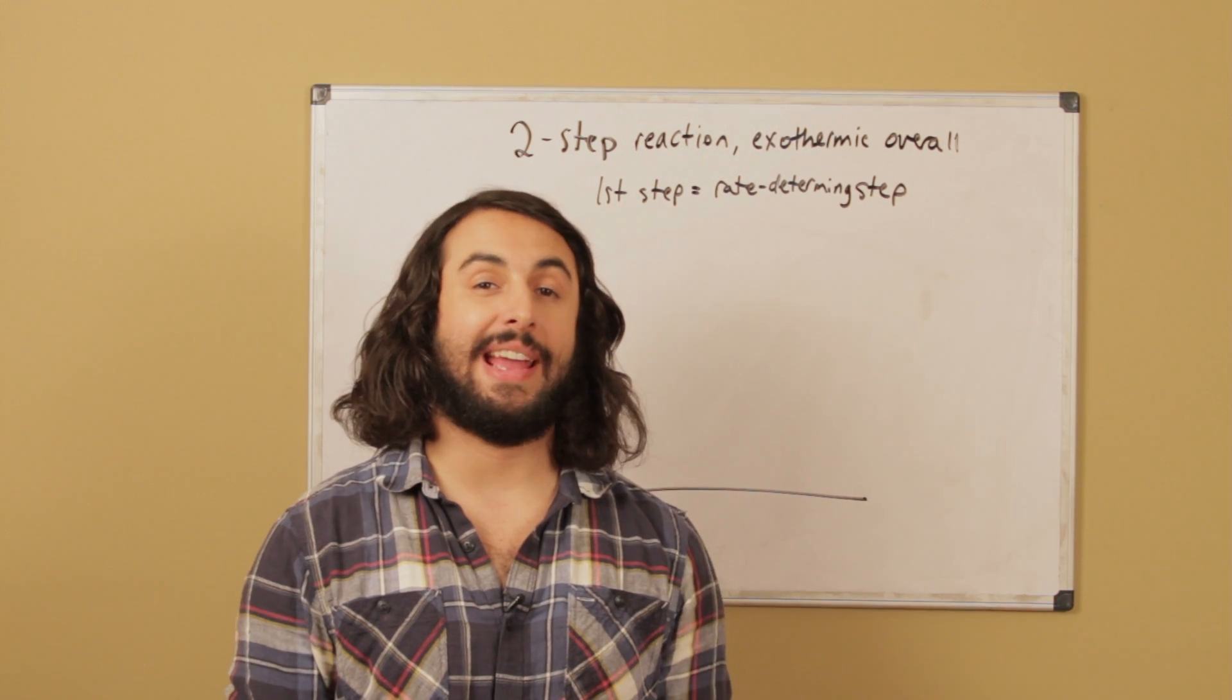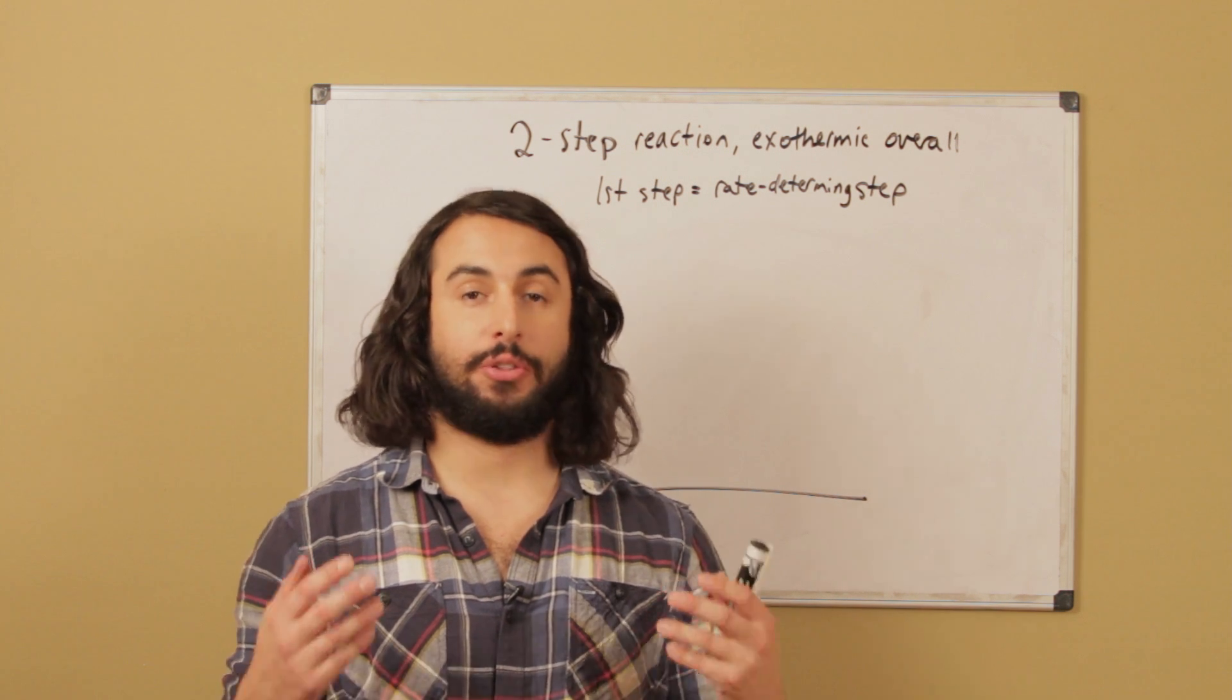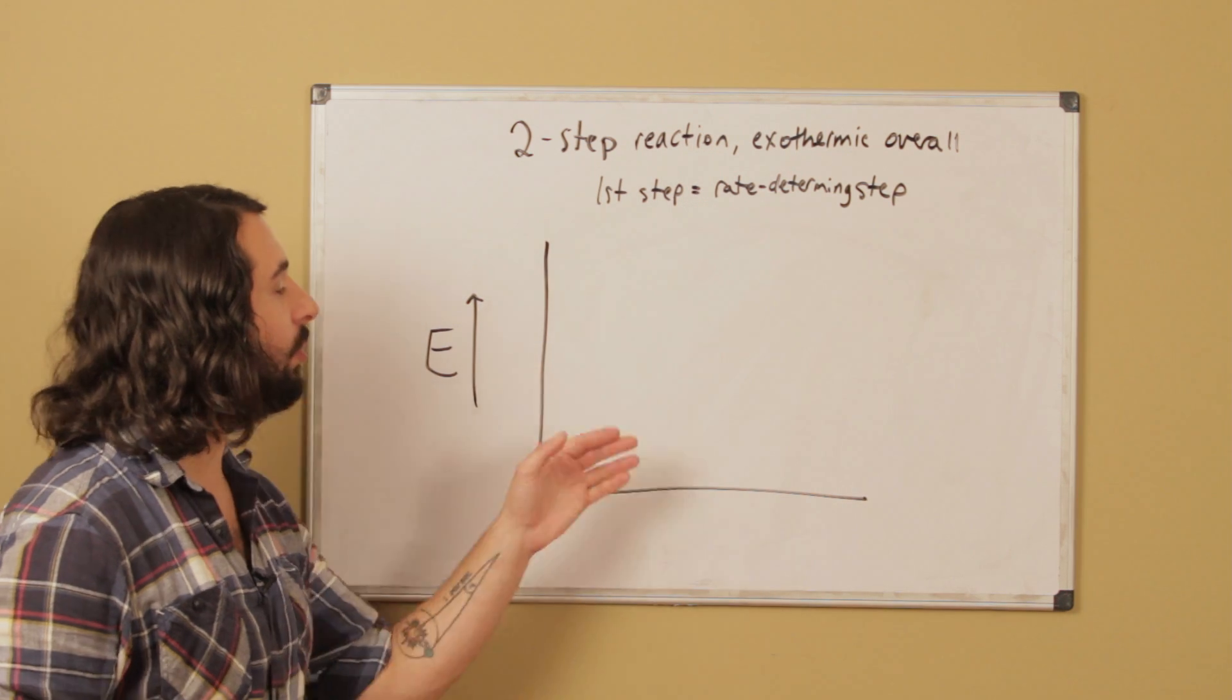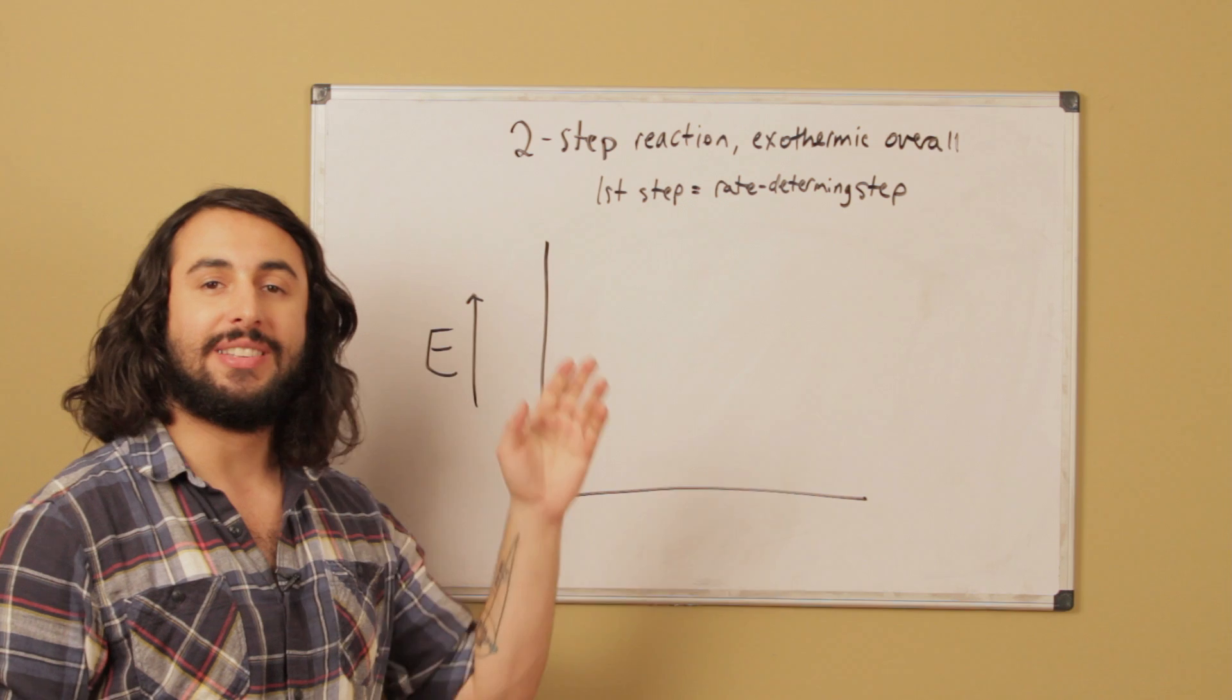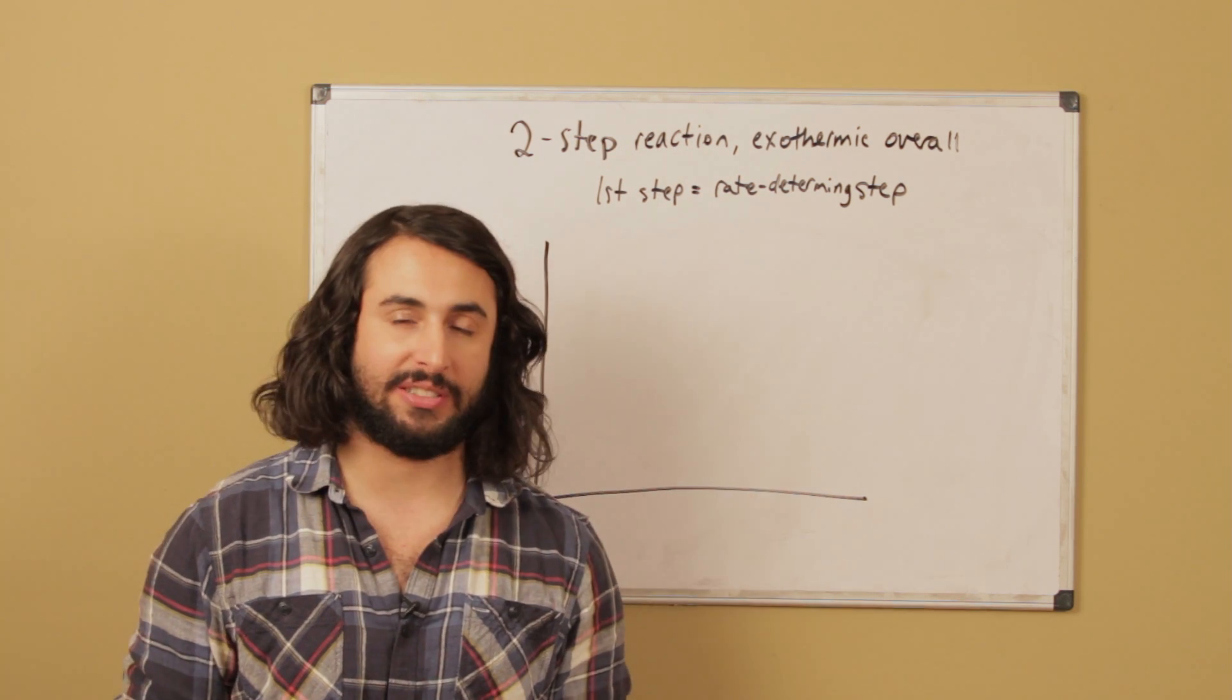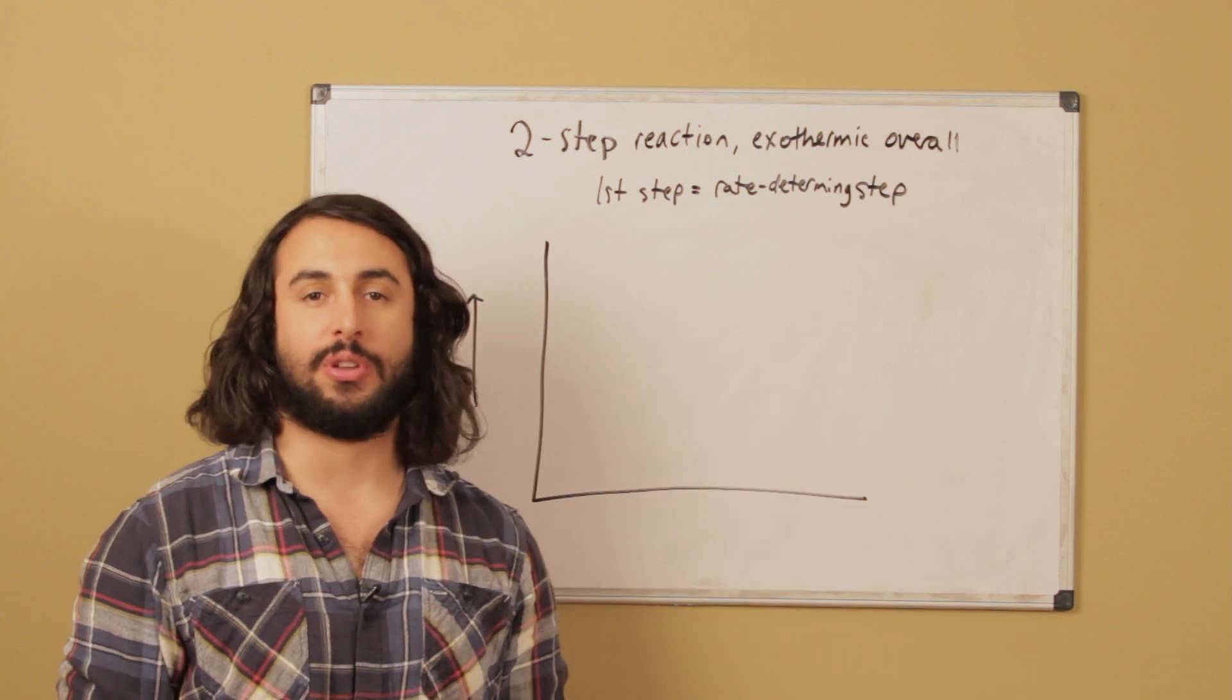For this practice problem, we're going to be looking at energy diagrams. Energy diagrams are very important for understanding the thermodynamics and kinetics of a reaction. We're going to draw an energy diagram for a two-step reaction that is exothermic overall and has a first step that is the rate-determining step. See if you can draw an energy diagram that fulfills all those criteria.